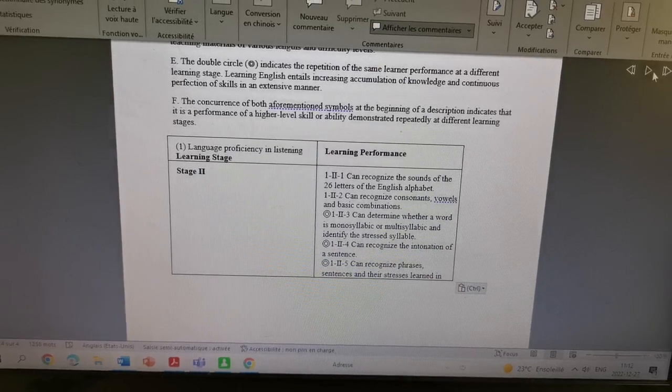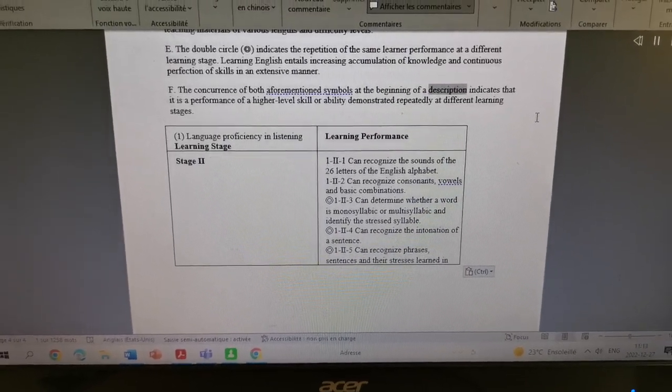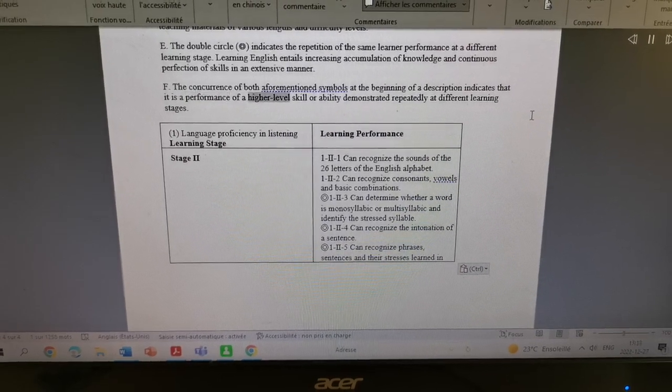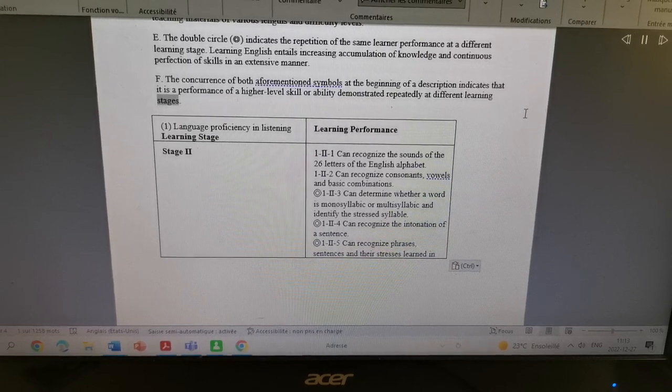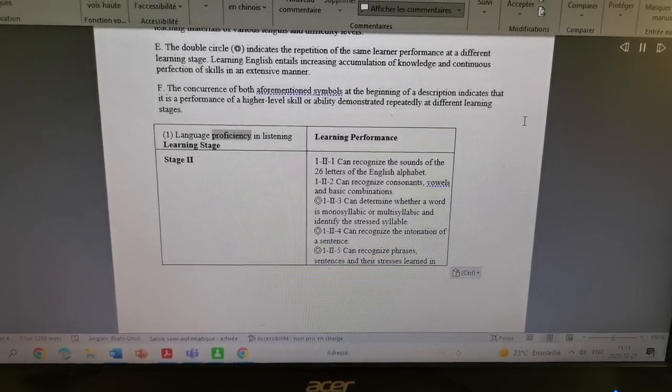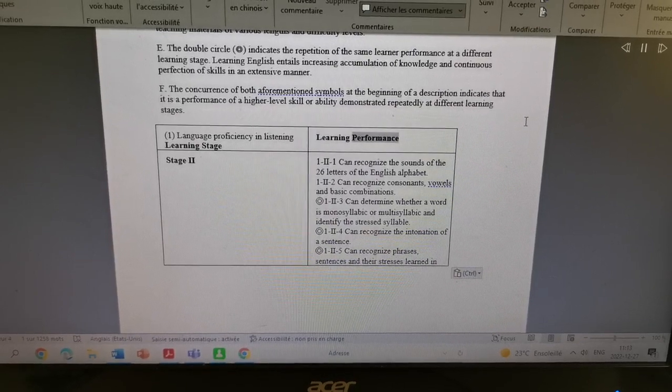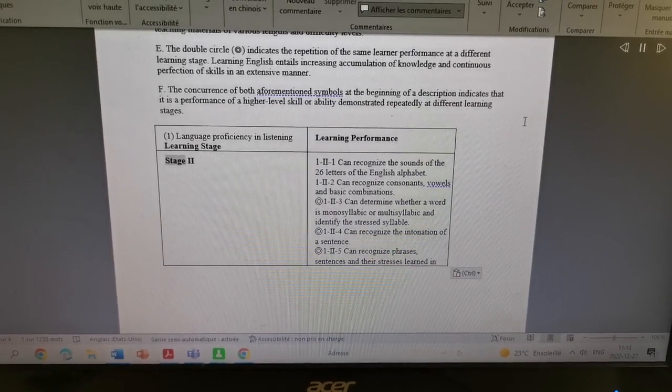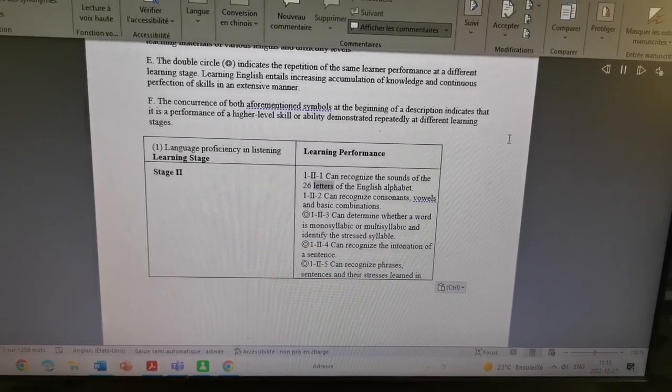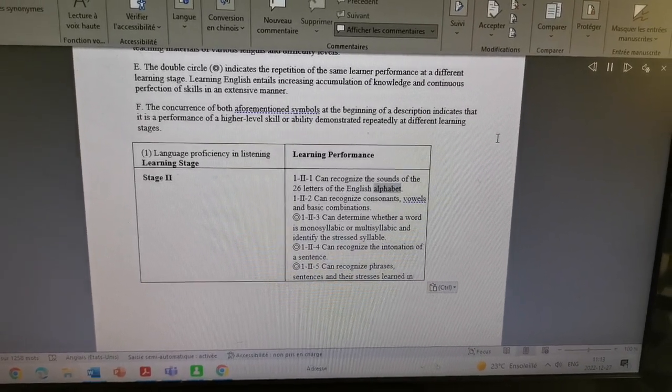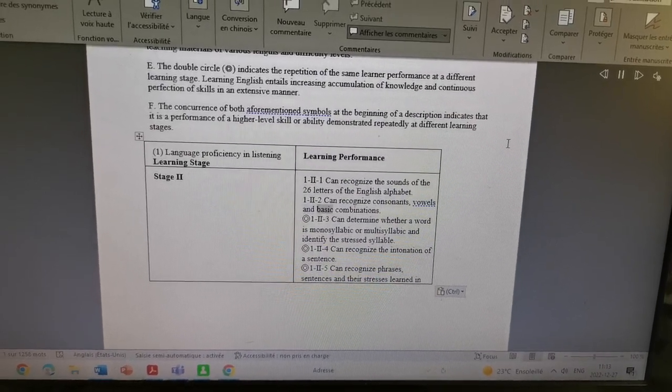Let's start over here. The concurrence of both aforementioned symbols at the beginning of... this is Microsoft Linda... is a performance of a higher level skill or ability demonstrated repeatedly at different learning stages. One: Language proficiency in listening, learning stage, learning performance, stage two. 1.1: Can recognize the sounds of the 26 letters of the English alphabet. 1.2: Can recognize consonants, vowels, and basic combinations.